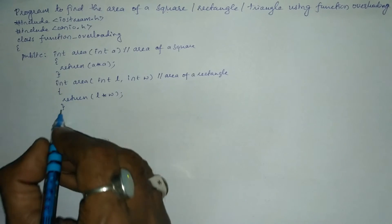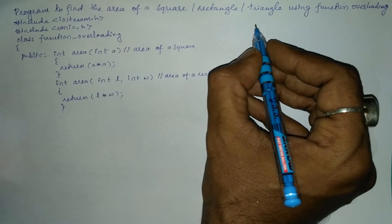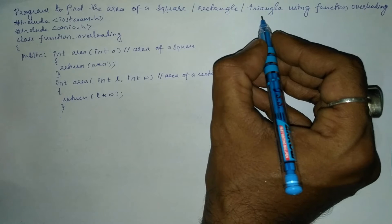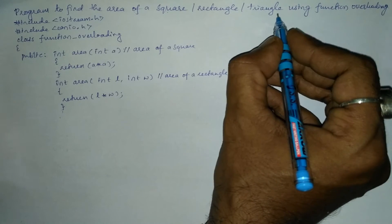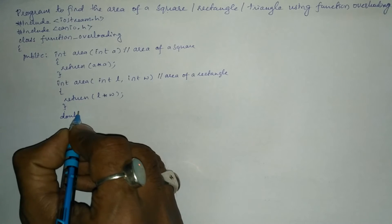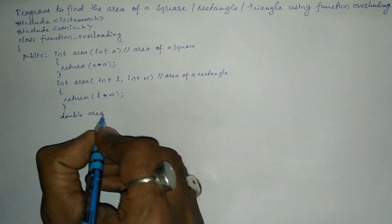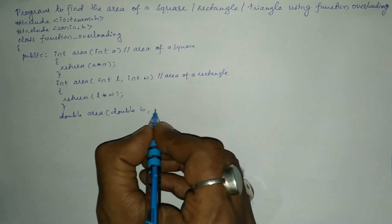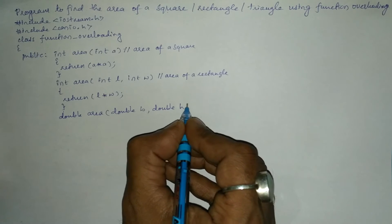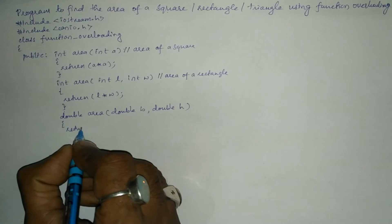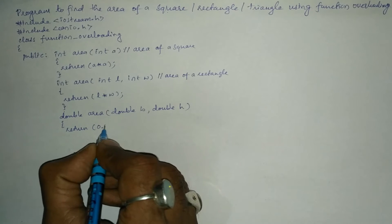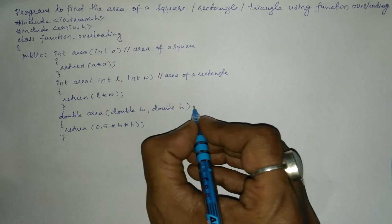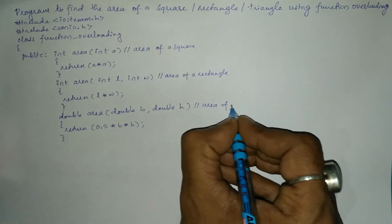Next we are going to find out the area of a triangle. The formula for the area of a triangle is half base into height. So we use the return type double, the same function name area, with parameters double b (base) and double h (height). Inside we write 0.5*b*h, which is used to find the area of a triangle.